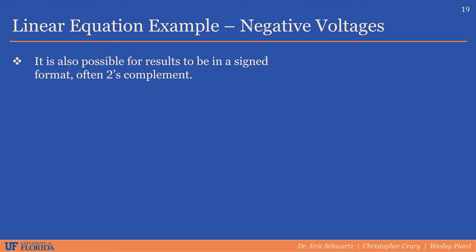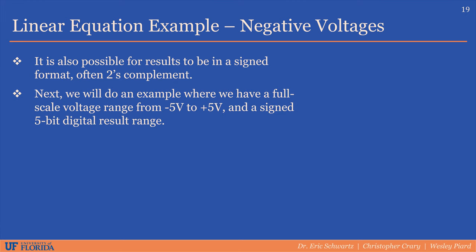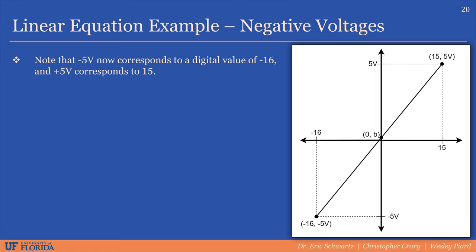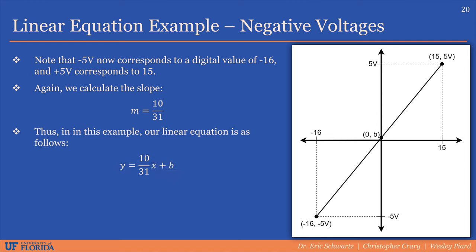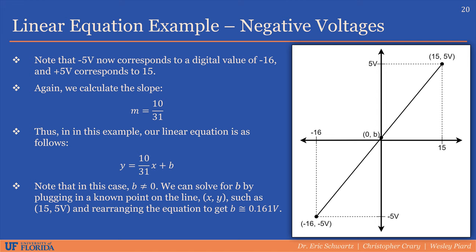In some cases it may be useful to store digital results in a signed or two's complement format. For example, with a full-scale voltage range from negative 5 volts to positive 5 volts and signed 5-bit digital values, we draw a line between the points (−16, −5V) and (15, 5V). Calculating the slope gives 10 over 31. Since the line does not pass through the origin, there is a vertical offset. Plugging in a known point, we get b ≈ 0.161 volts — a relatively small but potentially significant offset depending on the application.